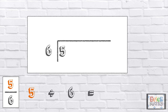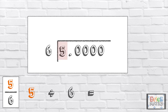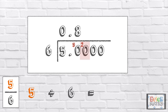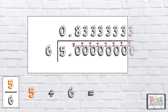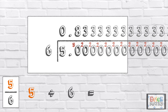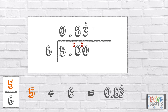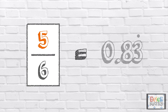Don't forget we need a decimal point and some zeros as placeholders. So first, how many sixes go into 5? 0 with 5 left over. Make sure you line the decimal point up in the same place. How many sixes go into 50? 6 times 8 is 48, so 6 goes into 50 8 times with 2 left over. How many times does 6 go into 20? 6 times 3 is 18, so 6 goes into 20 3 times with 2 left over. As the next part of the calculation is the same as the previous part, we know it will be a recurring decimal. This means the last digit will go on indefinitely. As it's a recurring number, the number 3 will go on forever, so you can use a symbol to show that it's a recurring number. So 5 sixths is equal to 0.83 recurring.